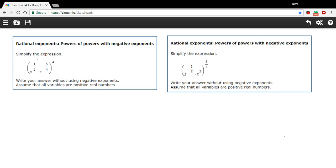So if we take a look at this first problem, we've got x to the 1 half, we've got z to the negative 5 fourths, and both of those parts are being raised to the fourth power. So we're going to take this 4 and multiply it by the 1 half and multiply it by the negative 5 fourths. And then it's going to get a little more complicated because we're not allowed to use negative exponents in our answers, but we'll figure that out when we get to it. Let's start with the multiplying the exponents.